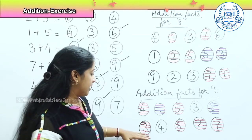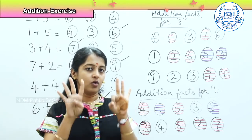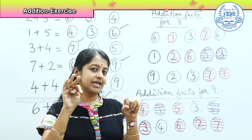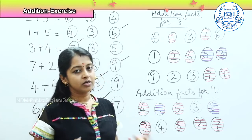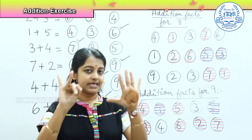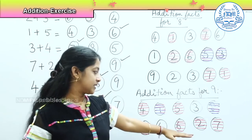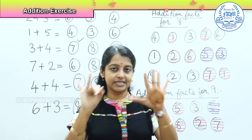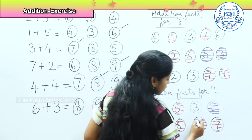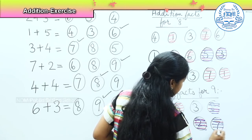Coming to the second question: if I add 3 with 4 — 3 in one hand, 4 in the other — the total is 1, 2, 3, 4, 5, 6, 7 — it does not solve my purpose. If I add 3 with 6: 6, 7, 8, 9 — so my first combination is 3 and 6. If I add 2 and 7: 7, 8, 9 — yes, it solves my purpose. So what are the two different options here? It is 3 and 6 and 7 and 2.